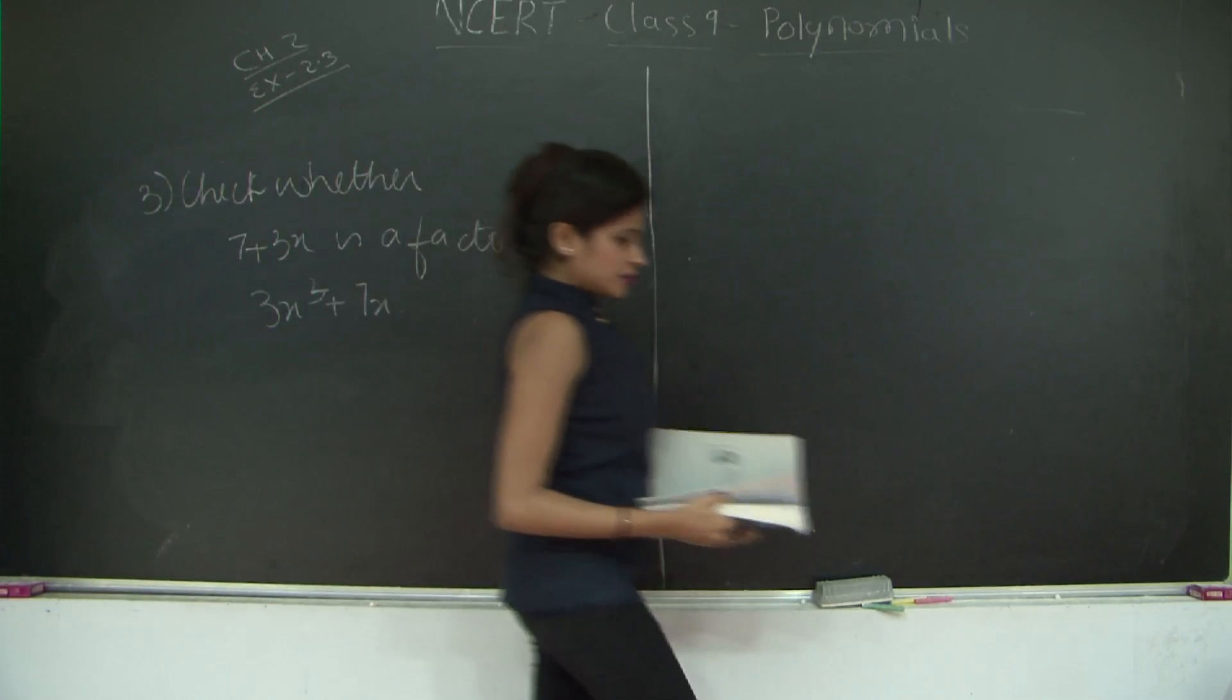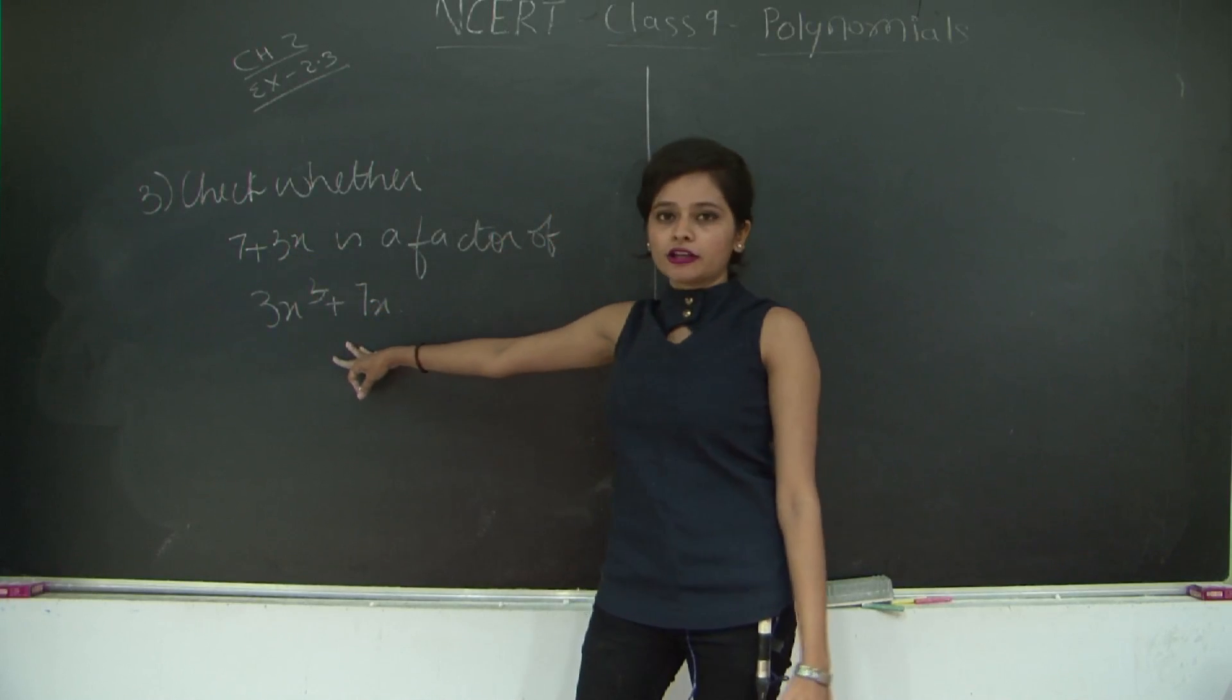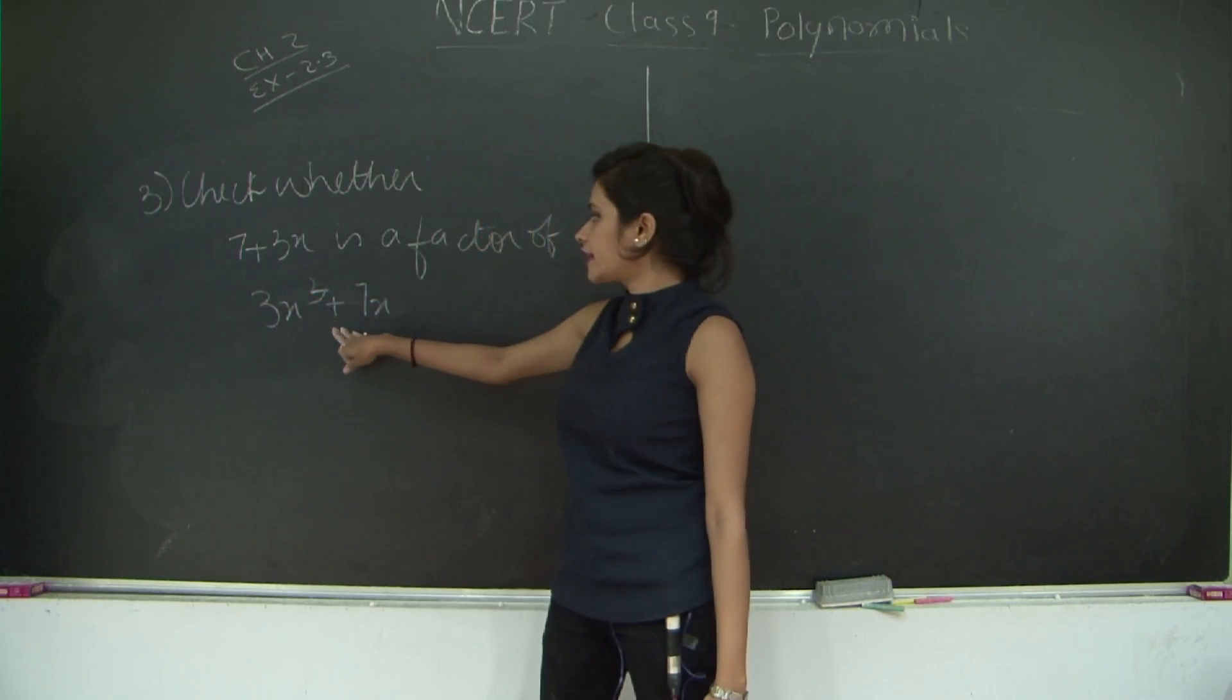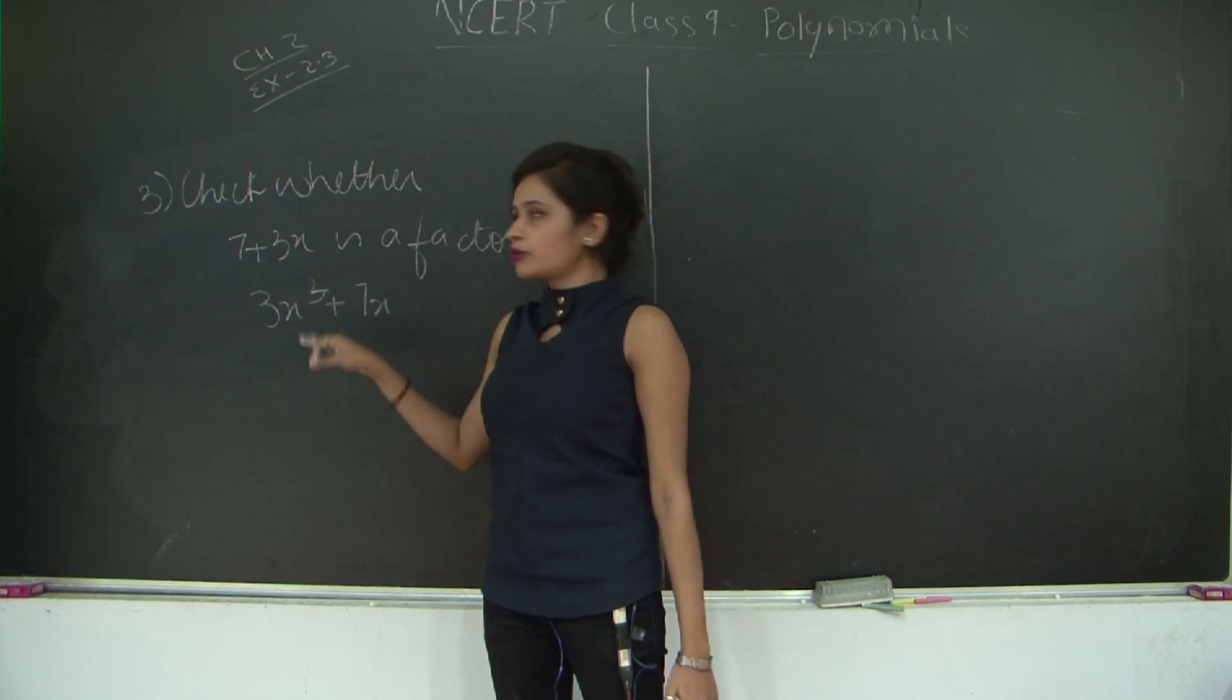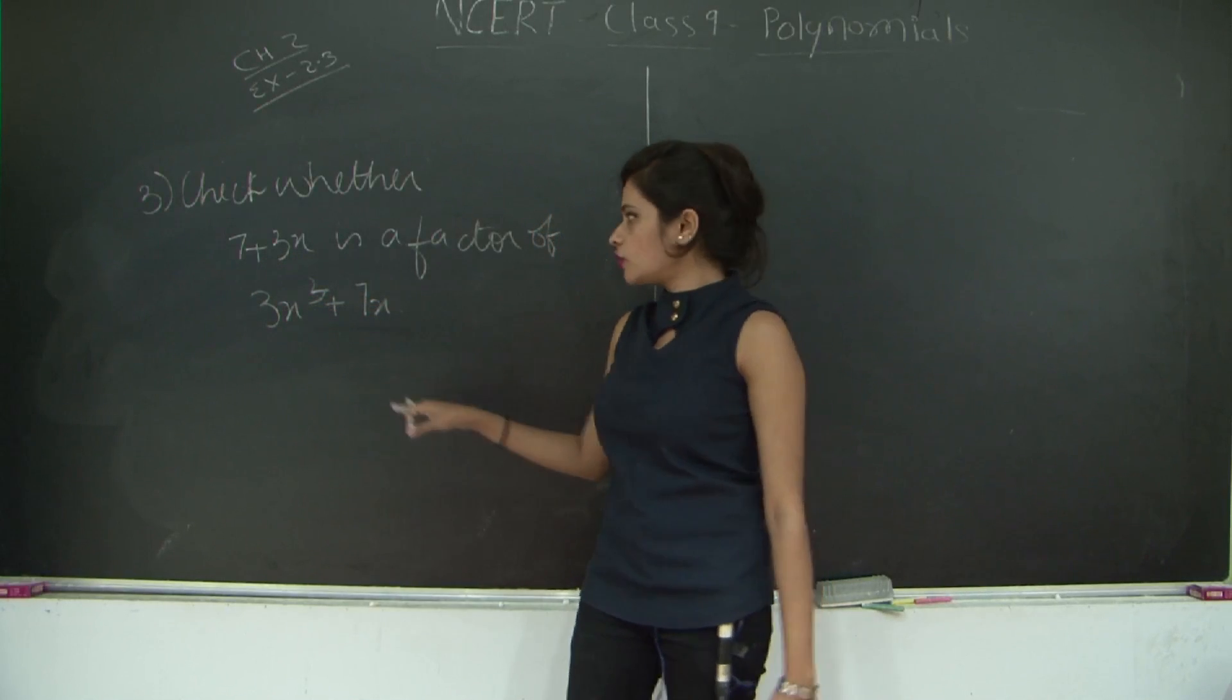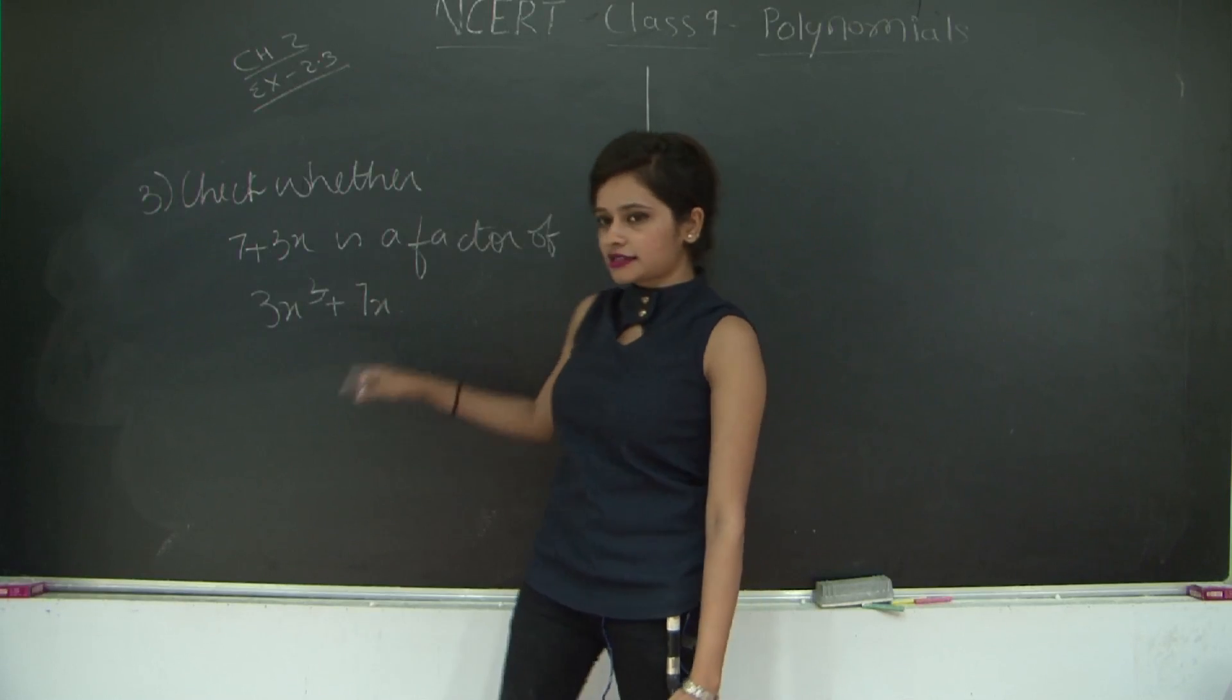Coming back to the remainder theorem, one polynomial is the factor of the other polynomial only if you get the remainder as 0. Which means 7 plus 3x will be the divisor in this case and 3x³ plus 7x is going to be a dividend. We are going to substitute the zero value of 7 plus 3x into this polynomial and if the answer is 0 then 7 plus 3x is going to be the factor of 3x³ plus 7x.